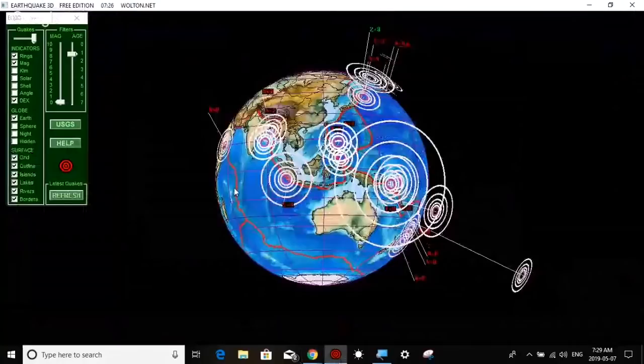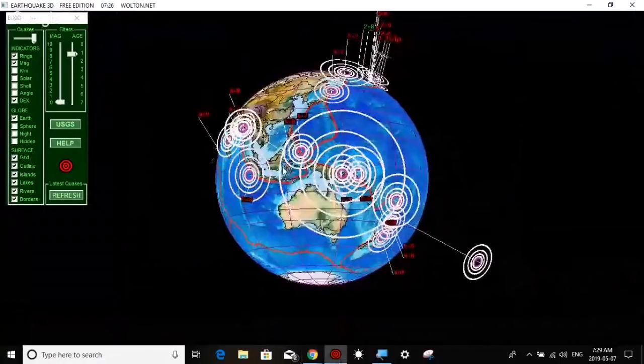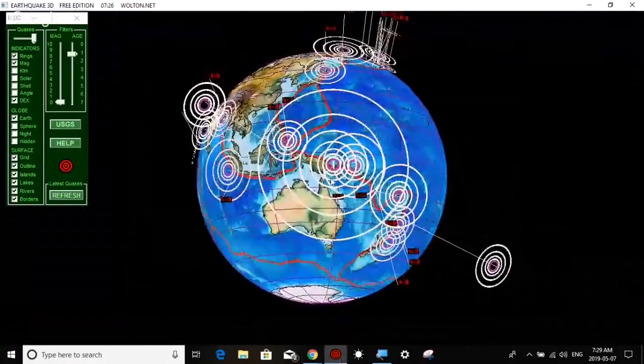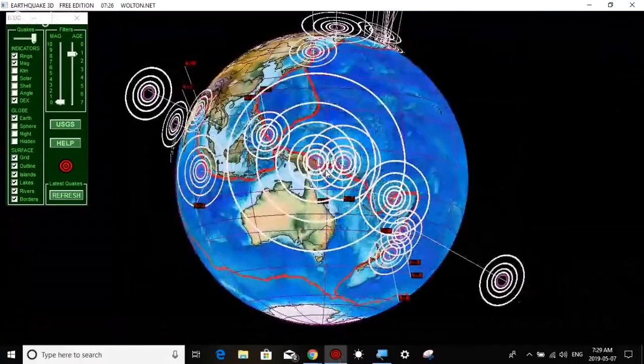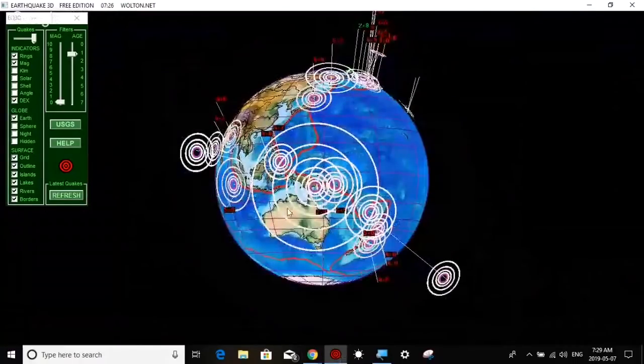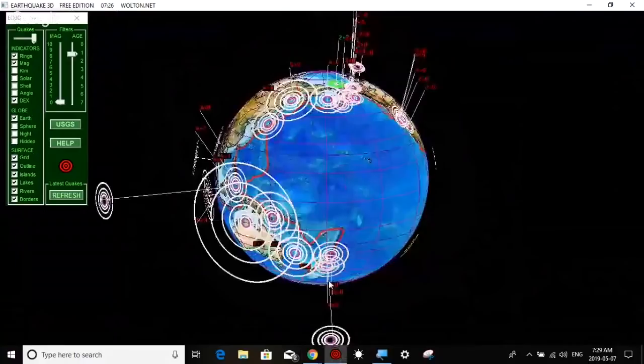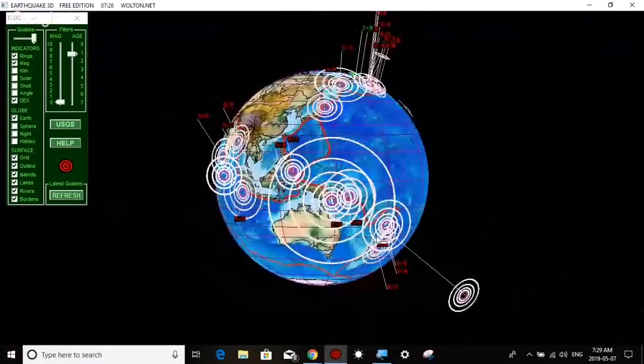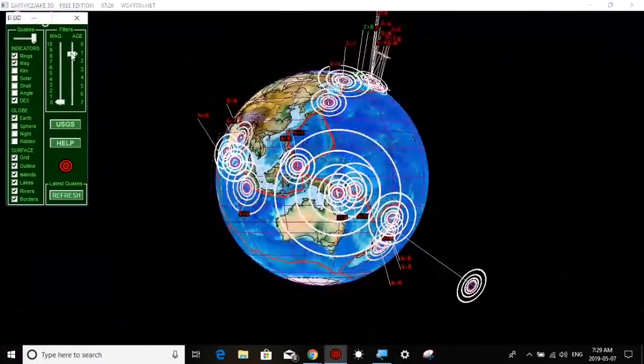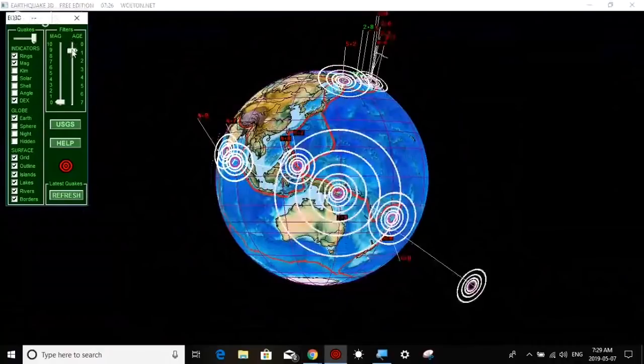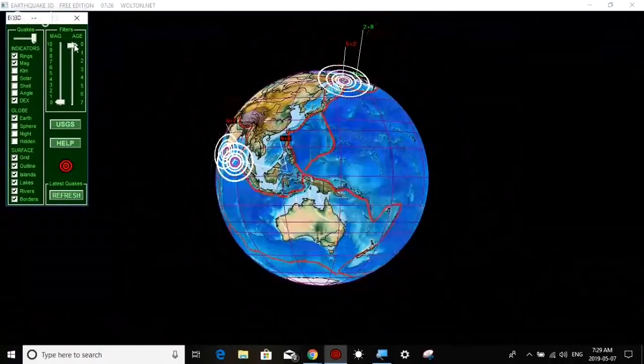Here we are, the last 24 hours for earthquakes. You can see that large 7.3 in Bulolo, Papua New Guinea, and that was at 127 kilometer depth. Very deep earthquakes on either side: Fiji as well as Indonesia.